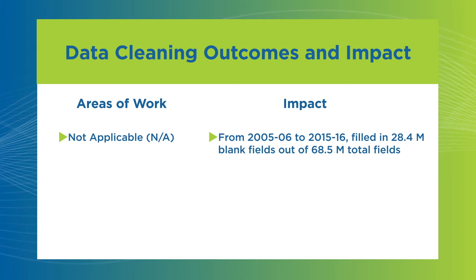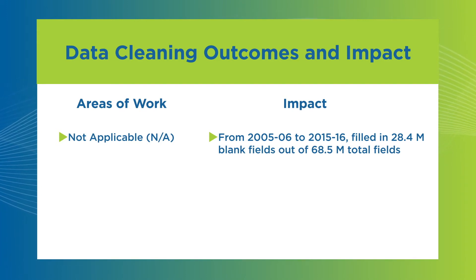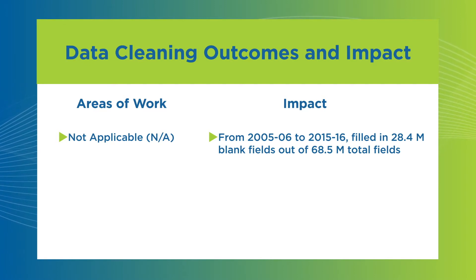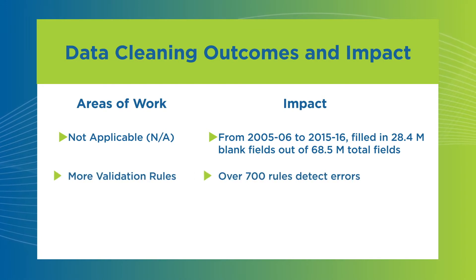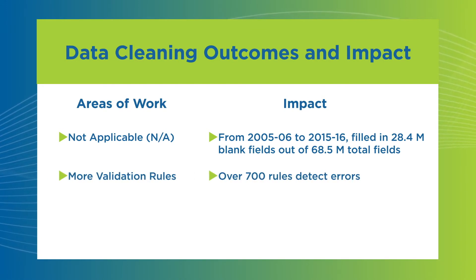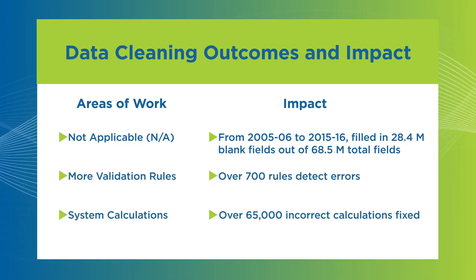From 2005–2006 to 2015–2016, we filled in 28.4 million blank fields out of 68.5 million total fields. Over 700 rules detect errors. Over 65,000 incorrect calculations were fixed.